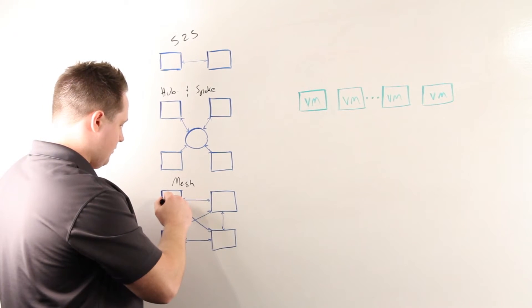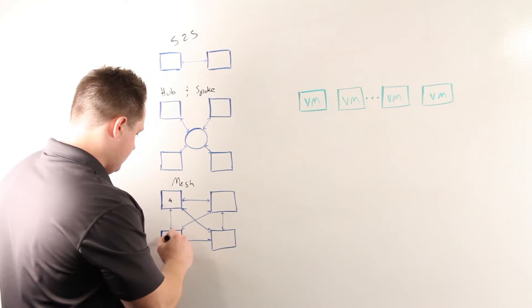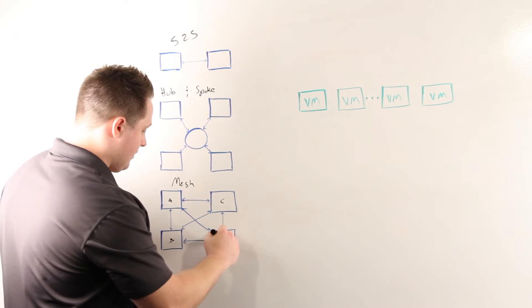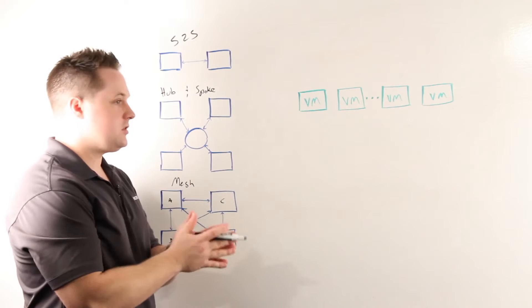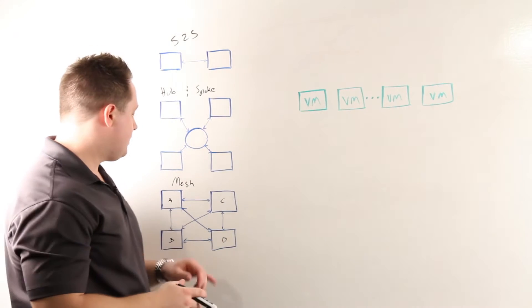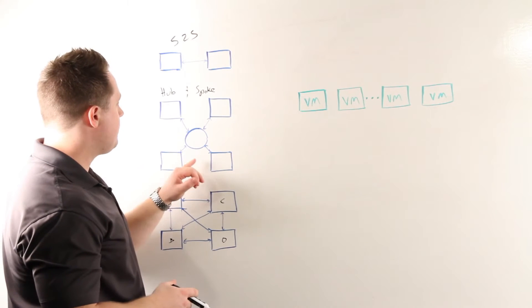With this, you can replicate—say if we call this site A—from site A to site B, C, and D. The key thing is, realistically, you're not going to replicate from one site to four sites, but it does give you the most flexibility in terms of your topology.